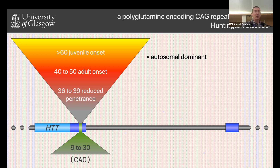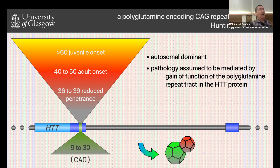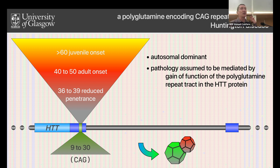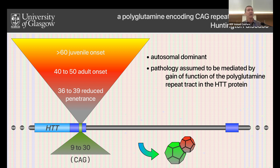This is an autosomal dominant disorder, just like DM1. The CAG repeat is in exon 1 and it's a coding repeat, so it results in the production of a protein with an enlarged polyglutamine tract. The assumption is that the primary route of downstream pathology is a function of that polyglutamine-containing protein.